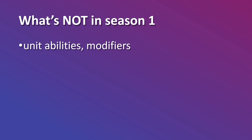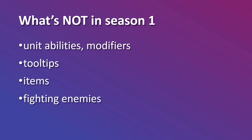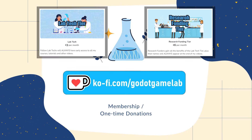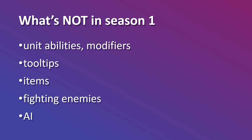Finally, let's talk about what's not in season one — I want this to act like an FAQ. All of these features will be included in season two: unit abilities and modifiers, tooltips for units and traits, an item system which lets you combine items and boost unit stats, and fighting enemies with AI. If you like my content, please consider checking out my Ko-fi page where you can donate one time or become a member and get early access to all my content and videos. That's it for this video — I'll see you in the next one. Bye-bye.